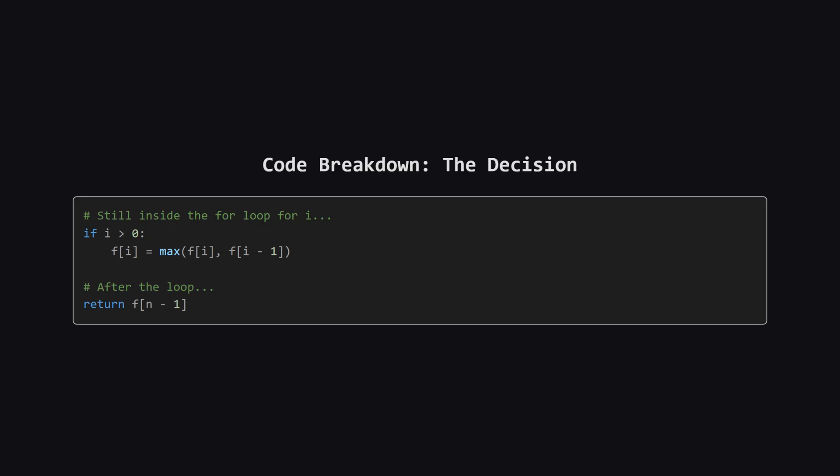Now for the final decision. We have the value if we take the current spell. What if we skip it? If we skip it, the best we can do is just the max damage from the previous step, f at i-1. So we set the current best damage, f at i, to be the maximum of those two choices — taking the current spell or skipping it. After the loop finishes, the last element in our f array holds the maximum possible damage overall, so we return that.